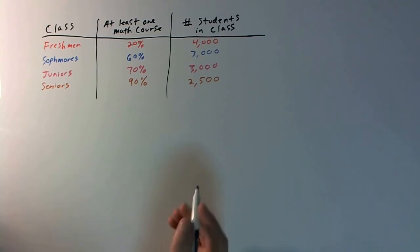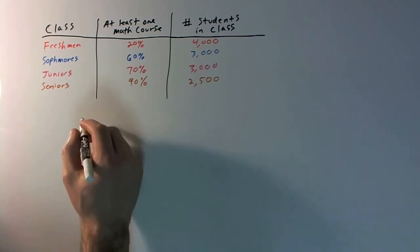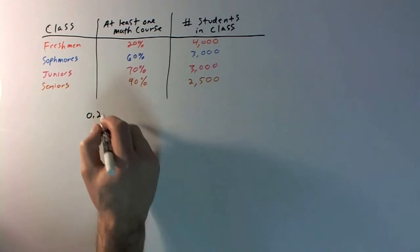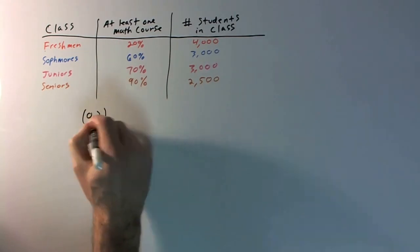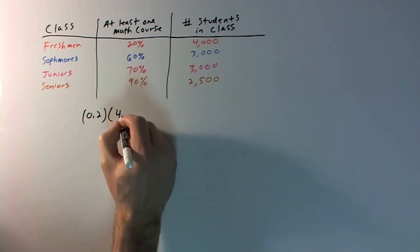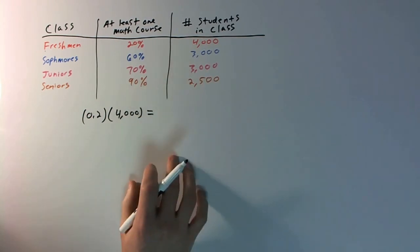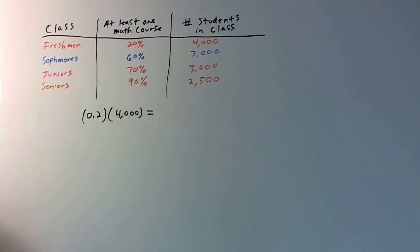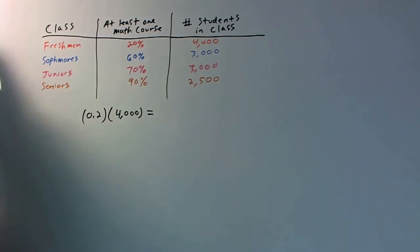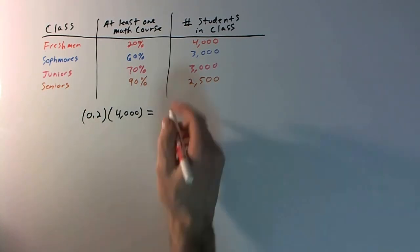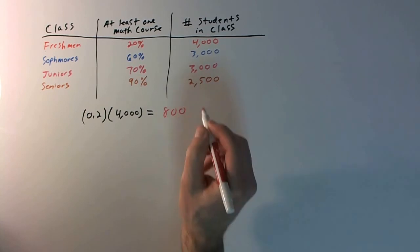So that's obviously 0.2 — 20% — times 4,000. And let's write this in red because the freshmen are in red. That's going to be 1,800.